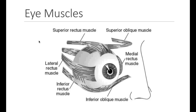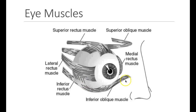Here is an illustration of the muscles that are attaching to the eyeball. As you can see, there are six muscles: the lateral rectus, the medial rectus, the superior rectus, the inferior rectus, the inferior oblique, and the superior oblique.